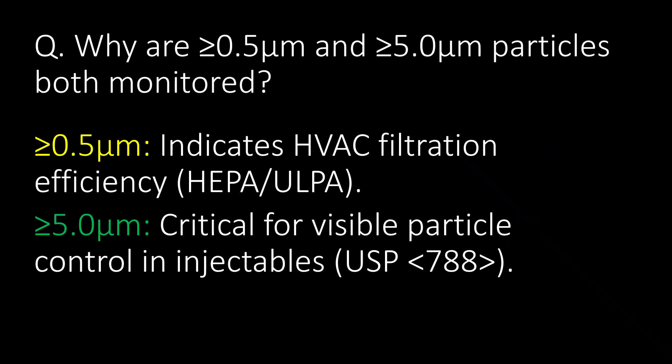Why are both greater than 0.5 micron and greater than 5 micron particles monitored? We monitor particles greater than 0.5 micron as it indicates HVAC filtration efficiency, and we monitor particles greater than 5 micron as these are critical for visible particle control in injectables.